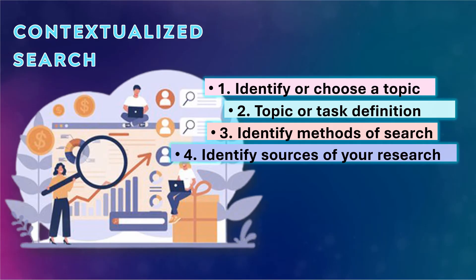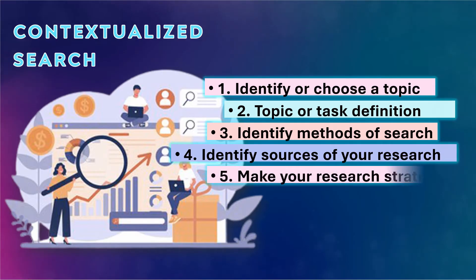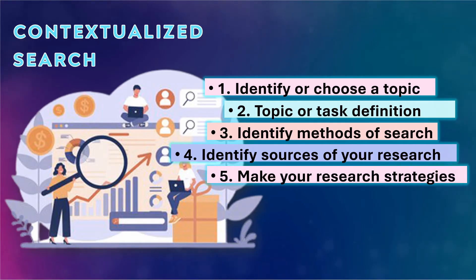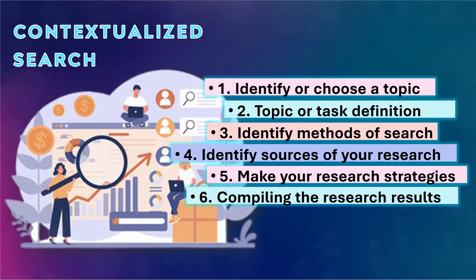Number five, make your research strategies. Here you can list down all the keywords or specific topics to search on the internet. Identified books can be searched by title, subject, author, or ISBN.